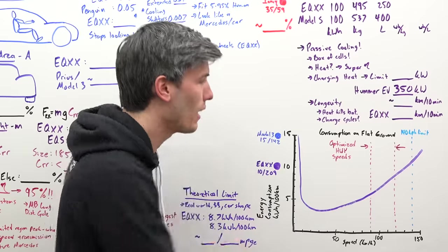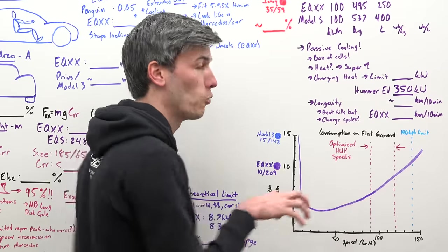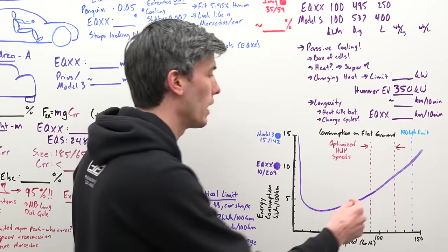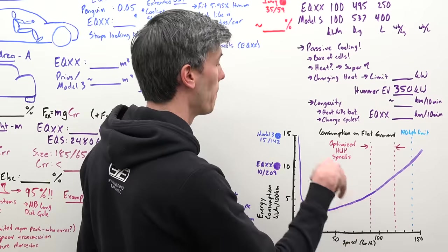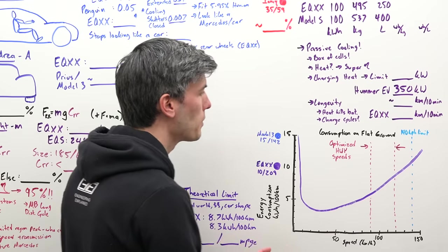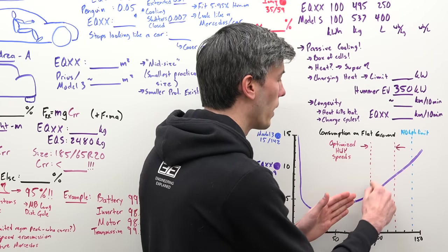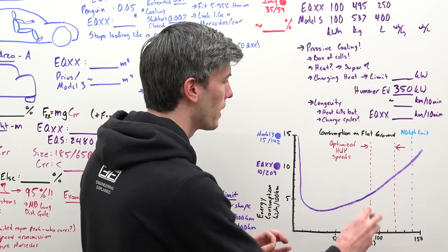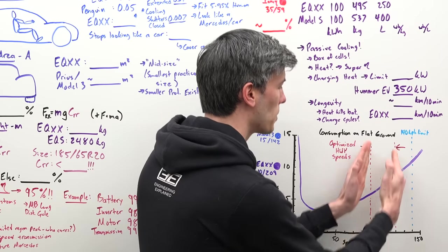That doesn't mean if it drove slower it wouldn't get better efficiency. It would get better fuel economy, better energy consumption driving slower. But they're optimizing it for driving on the highway.